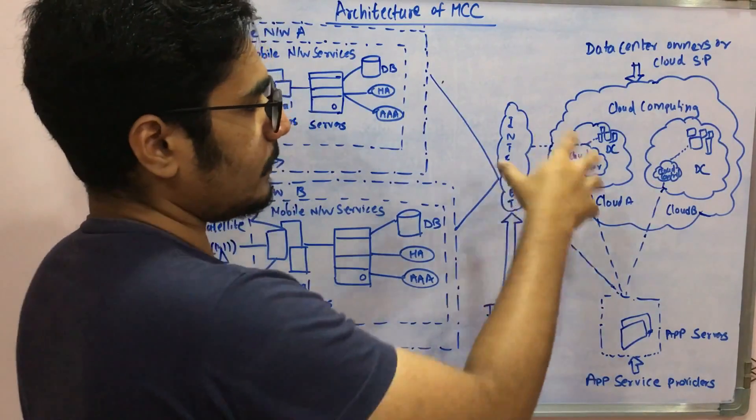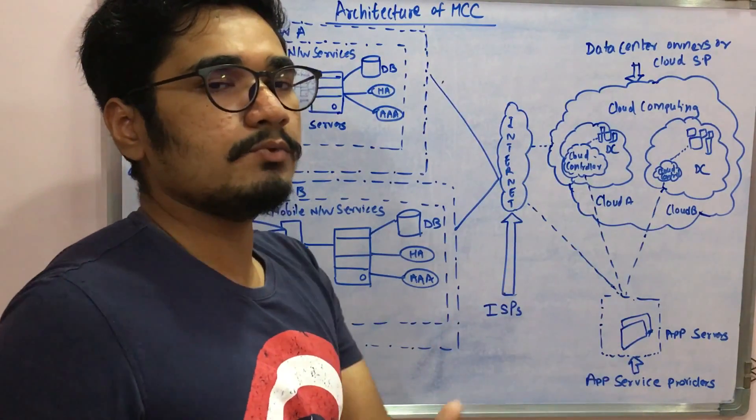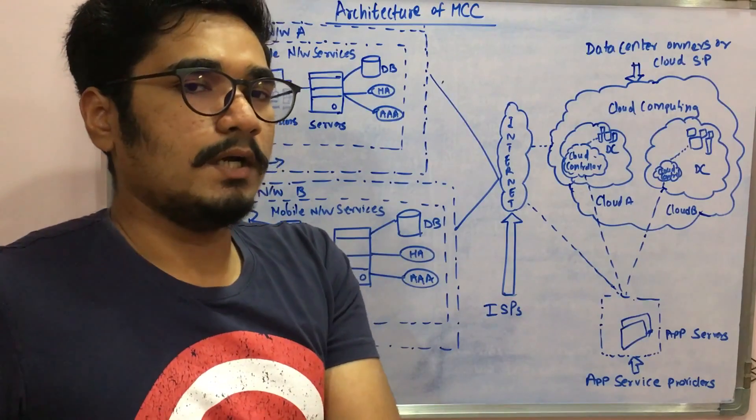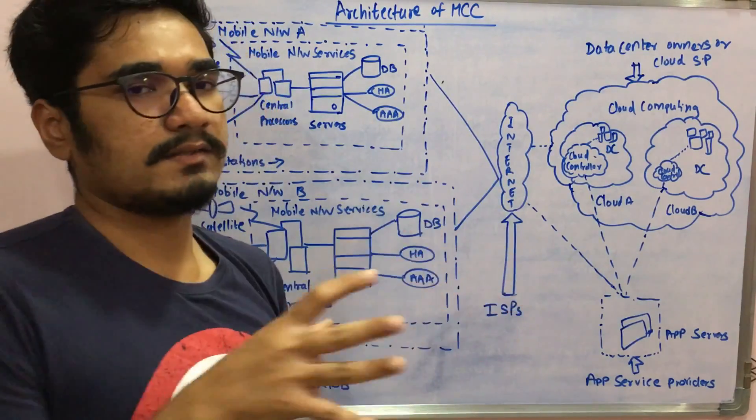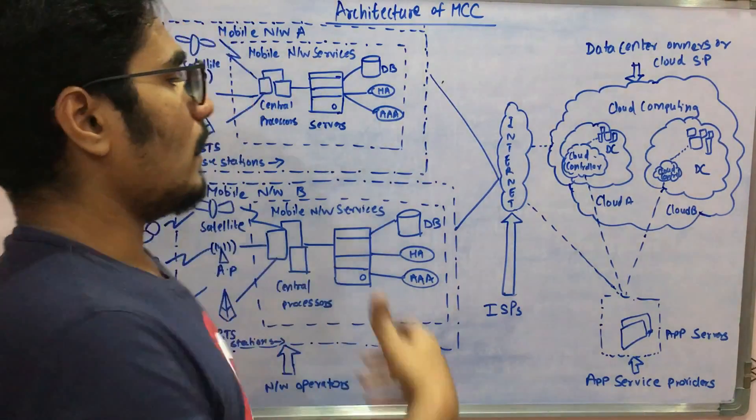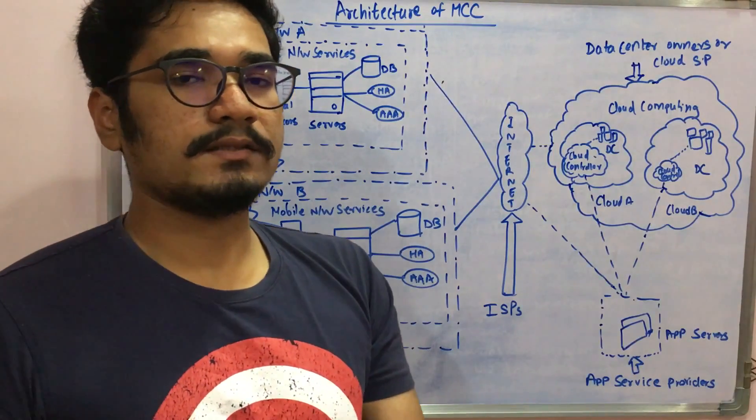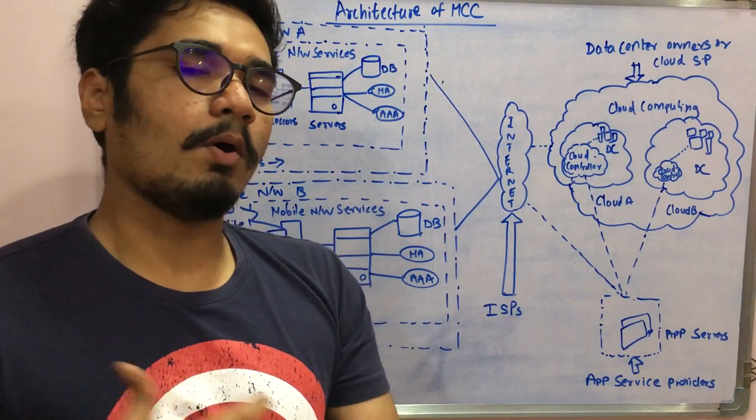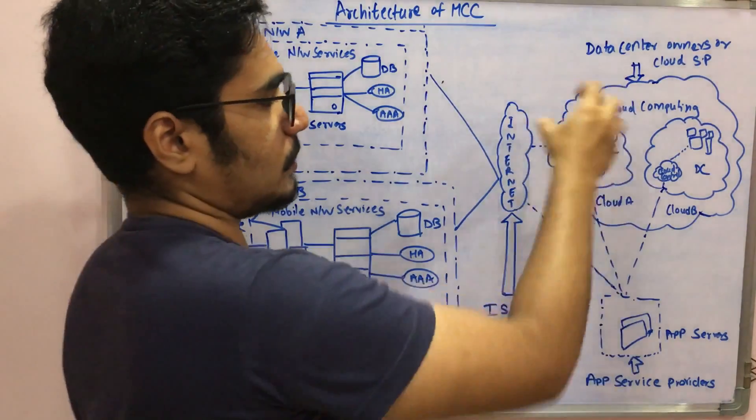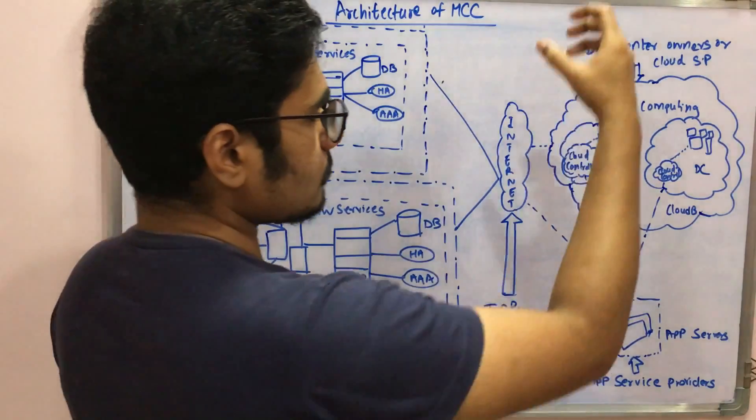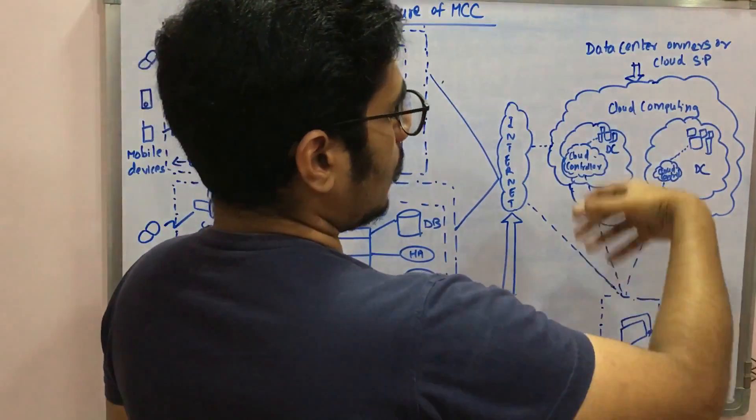You have some data center which is there for each cloud controller. Data centers are mainly used for keeping the storage data, whether it's subscriber data, credentials, user passwords, queries, or all other kinds of information. All these are stored in the data center.